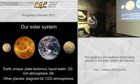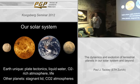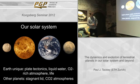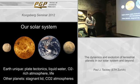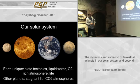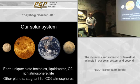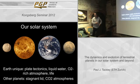Surveying the terrestrial planets in our solar system: Earth is unique because it is the only planet we know of to have plate tectonics, liquid water at the surface, an oxygen-rich atmosphere, and life. The other planets — Mercury, Venus, and Mars — have effectively a single plate, known as a stagnant lid, so there are no sharp plate boundaries on these planets.